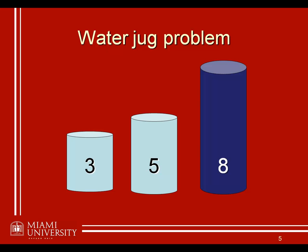Some of you may have encountered this in cognitive psychology or other classes. It's a very common problem in applied mathematics and computer science, where it's used as a standard example for writing toy programs. You might have even seen it in movies such as Die Hard 3, for the big Bruce Willis fans out there.